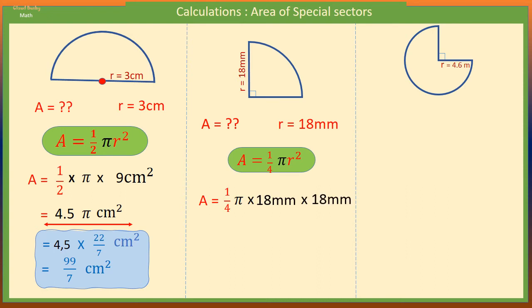But 18 millimeters times 18 millimeters will give us 324 millimeters squared. A quarter of this will give us 81π square millimeters. This is the answer in terms of π.